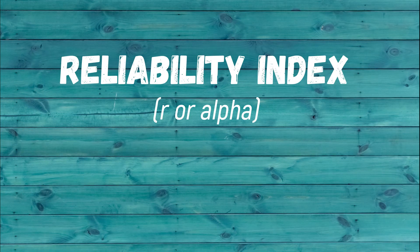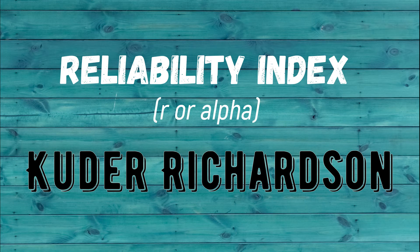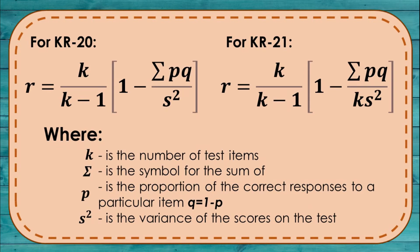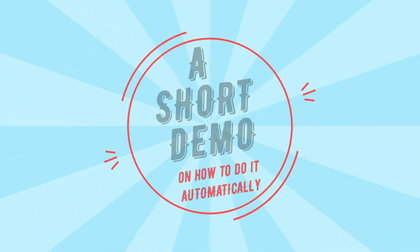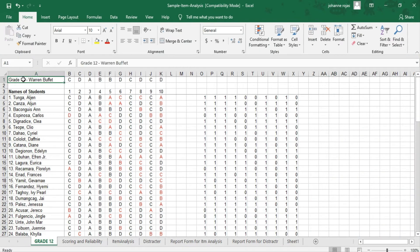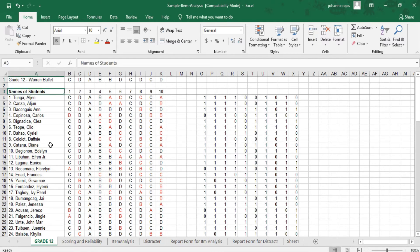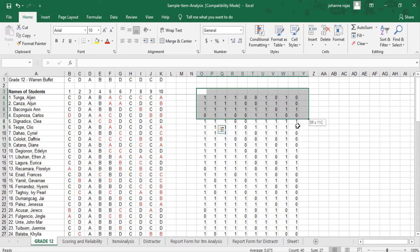In item analysis we also consider the reliability index, r or alpha, using the Kuder-Richardson method (KR). There are two types: KR-20 and KR-21, where k is the number of test items, the summation symbol represents the sum, p is the proportion of correct responses to a particular item, q equals 1 minus p, and s-squared is the variance of the scores on the test. Here is a short demo on how to do item analysis in electronic format, covering the section, correct answers, total number of items (1 to 10), student names, their answers, and the 0-to-1 form needed for the next step.